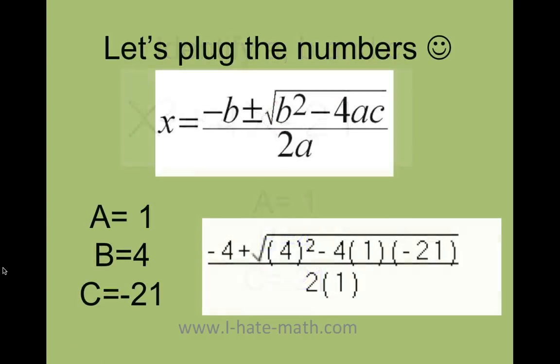So let's go ahead and solve it. Remember I had A equals 1, B equals 4, C equals negative 21. I just plug it here. Negative B plus and minus and then B squared. In this case B which is 4 squared minus 4 times A times negative 21.